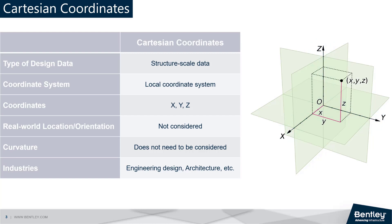These coordinates can be used to accurately place elements such as points, lines, and shapes in the design file. When working with Cartesian coordinates, the geographic location and orientation of the structure are not considered in selecting the coordinate system.